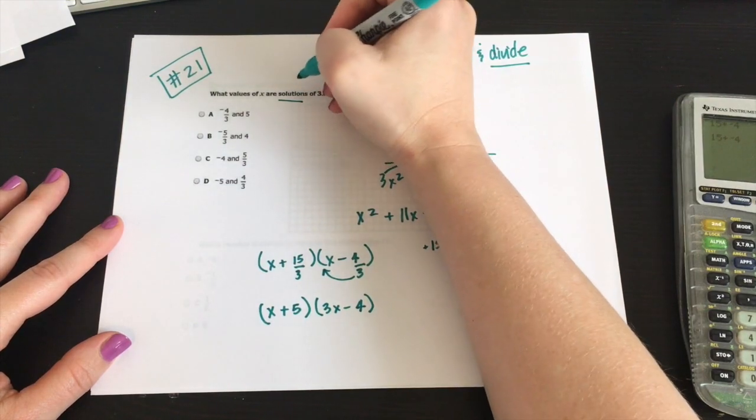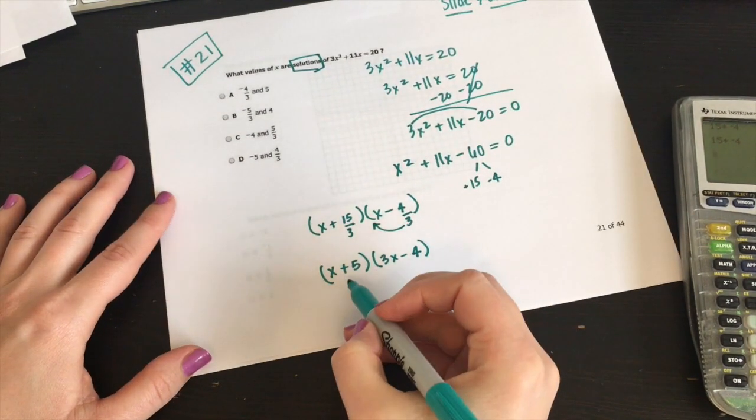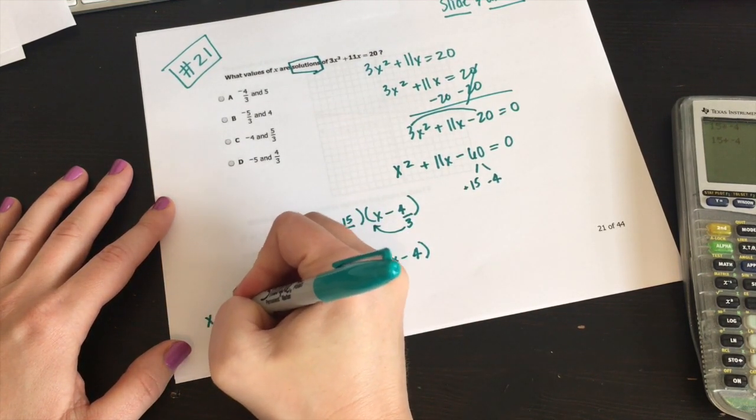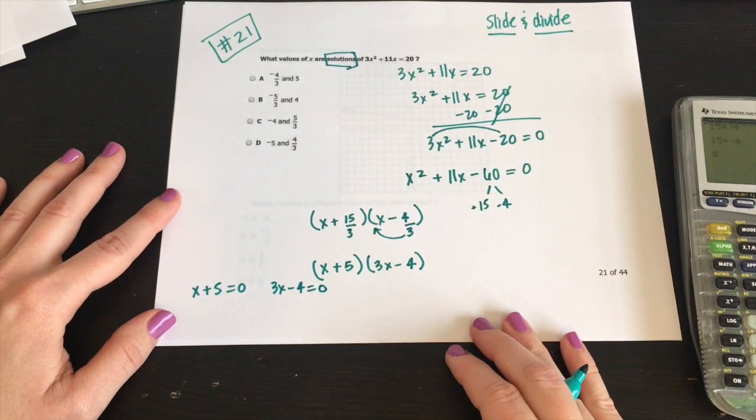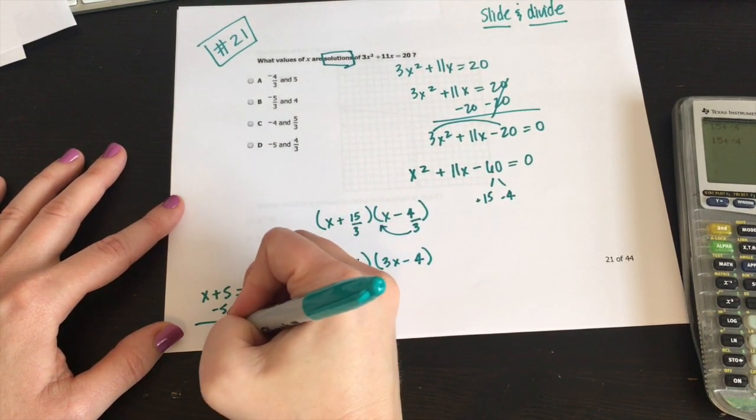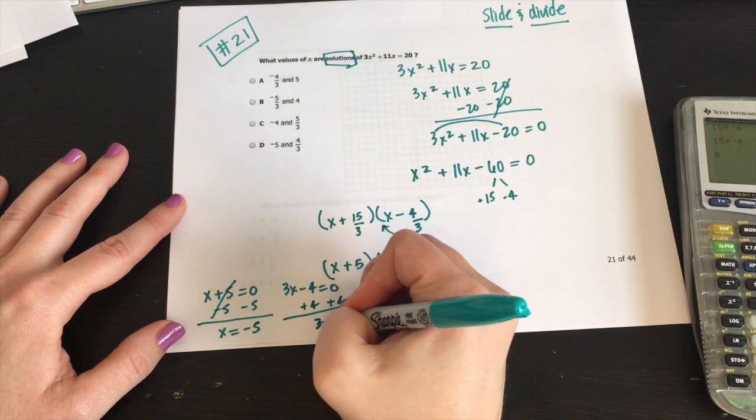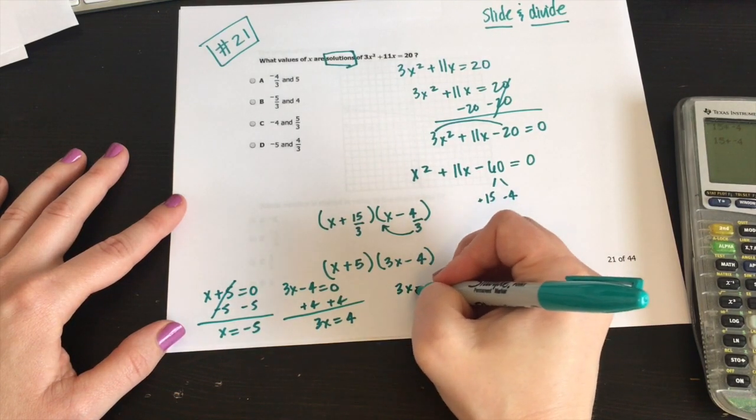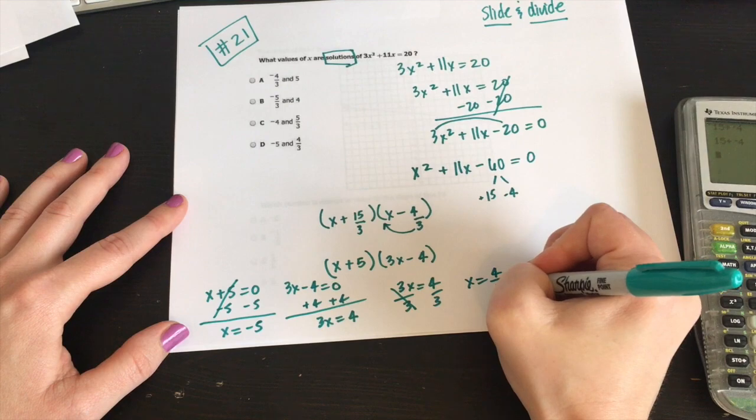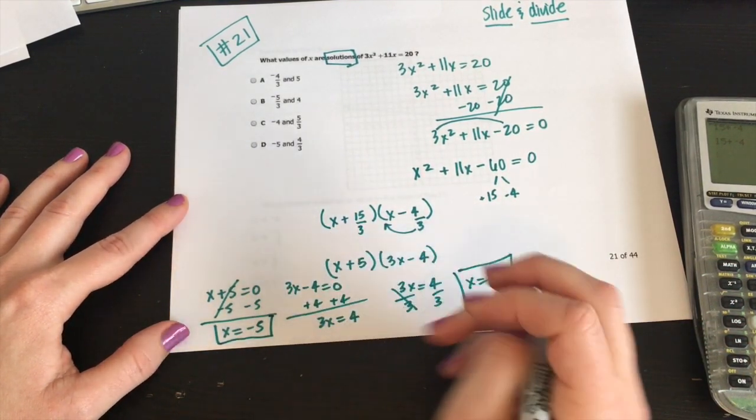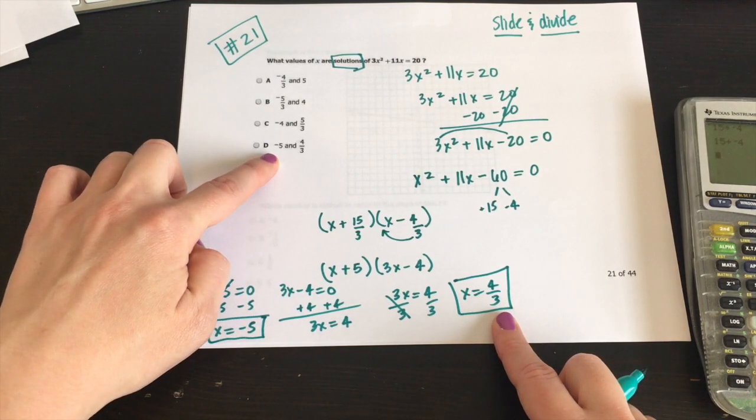Now, it says what solutions, it doesn't say factor it. But factoring it gets us one step closer to our solutions. So what we want to do now is set both of these to equal zero. X plus five is equal to zero. And then three X minus four is equal to zero. We're going to solve it. Minus five minus five, X is equal to minus five. Do the same thing over here. Plus four plus four, three X is equal to four. Divide by three, divide by three. X is equal to four over three. There's my solutions right there. So we have X is equal to negative five, X is equal to four over three. There's our answer.